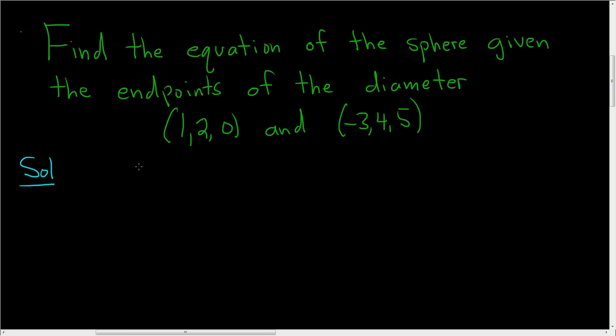The center of the sphere will be the midpoint of these two points because these are the endpoints of the diameter, so the midpoint is right in the middle. So the midpoint formula basically says that you add the x coordinates and you divide by 2, you add the y coordinates and then divide by 2, and then add the z coordinates and divide by 2.